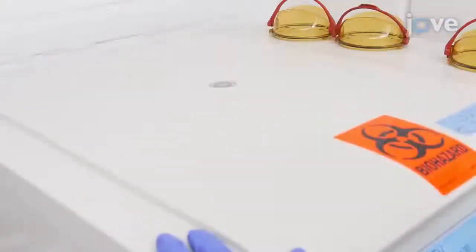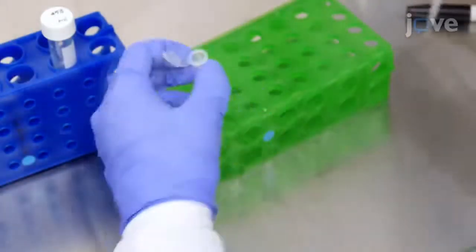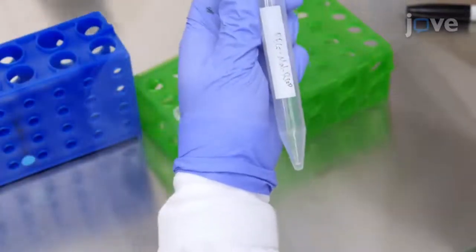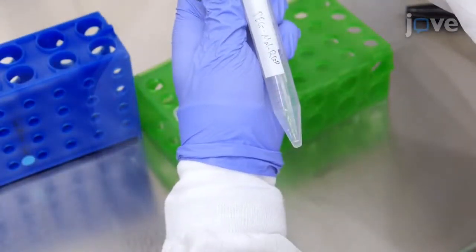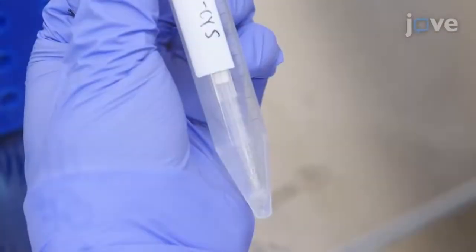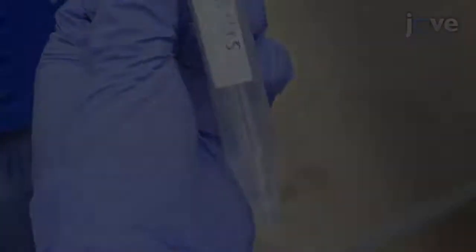Collect the cells by centrifugation and re-suspend 1 pellet in 80 microliters of freshly prepared polyethylene glycol maleamide, or PEG-MAL-RGD, and 1 pellet in 80 microliters of freshly prepared PEG-MAL-SYS solution per mold.